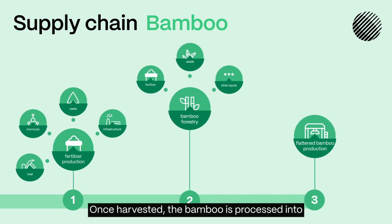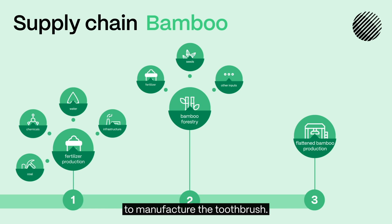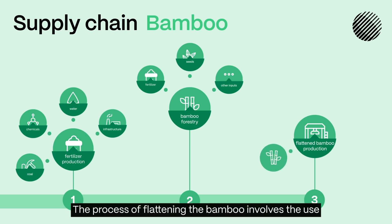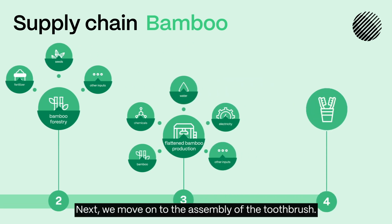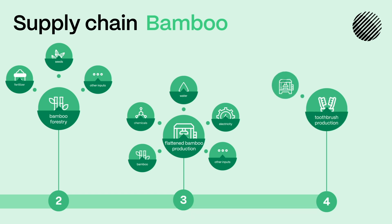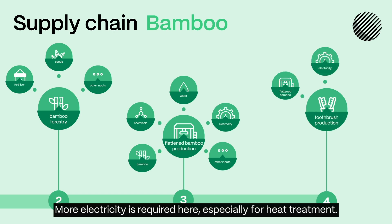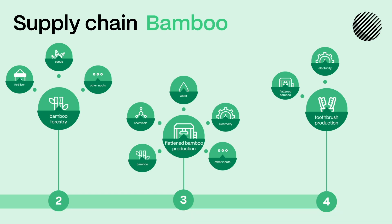Once harvested, the bamboo is processed into flattened bamboo, which is then used to manufacture the toothbrush. The process of flattening the bamboo involves the use of chemicals, water, electricity, and other inputs. Next, we move on to the assembly of the toothbrush. More electricity is required here, especially for heat treatment.